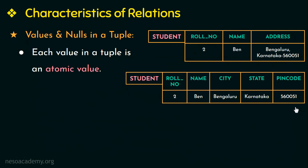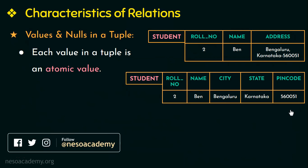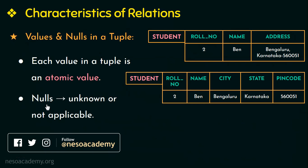Multivalued attributes are attributes having a set of values or multiple values for one entity. In relational databases, multivalued attributes have to be represented by separate relations or separate tables — we will learn about that in detail in the later chapters. We have also already learned about null values in the ER model. Null values can have several meanings: the value is unknown, the value exists but is not available, or the value is not applicable to that particular tuple.